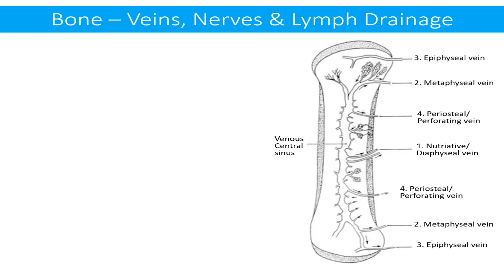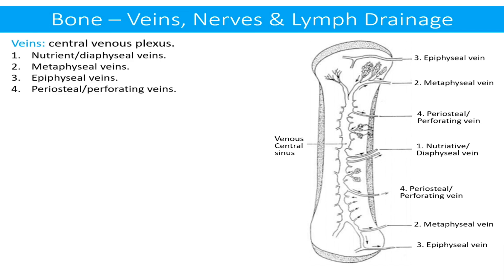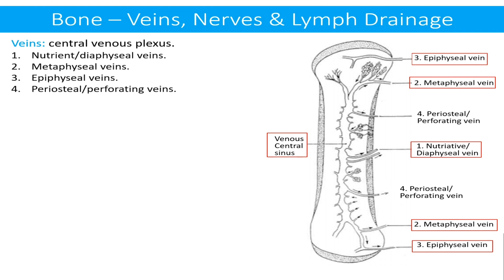Regarding the venous drainage of the long bones: there is a central venous plexus present in the marrow cavity at the center of the long bone. This is drained by: number one, nutrient veins; number two, metaphyseal veins; number three, epiphyseal veins; and number four, periosteal veins. All these veins follow their fellow arteries.